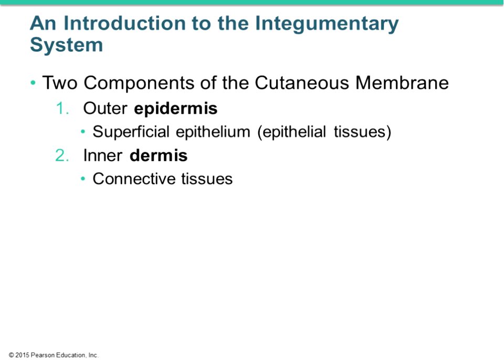The cutaneous membrane itself consists of two parts: it has an epithelial part and a connective tissue part. The epithelial part is the epidermis — above the dermis — and the dermis is the connective tissue part. The epidermis is stratified squamous epithelium, whereas the dermis is primarily areolar connective tissue.